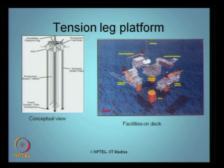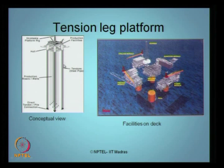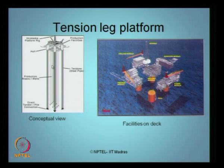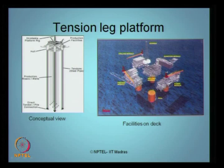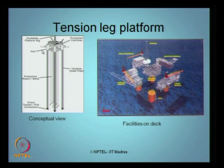Tension leg platforms are shown as a conceptual view on the left-hand side figure. It contains different components. The components holding down the TLP to the seabed are what we call tendons or tethers. There are also production risers used for oil exploration. Tendons are directly connected to the seabed using fixed-type anchors. The topside has many facilities, including production facilities — what we call the hull — and pontoon members. You can also have a platform rig.